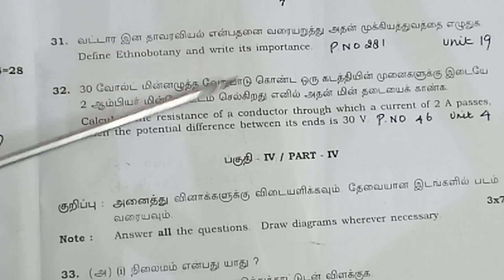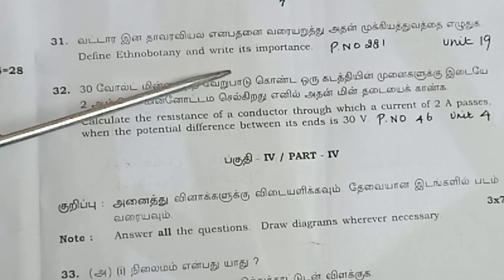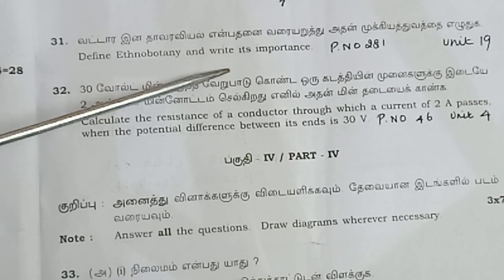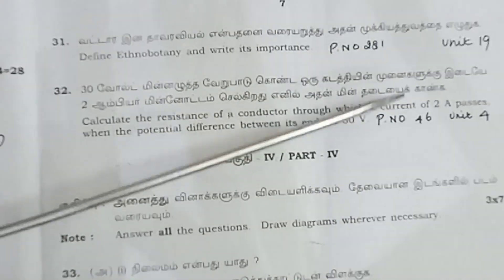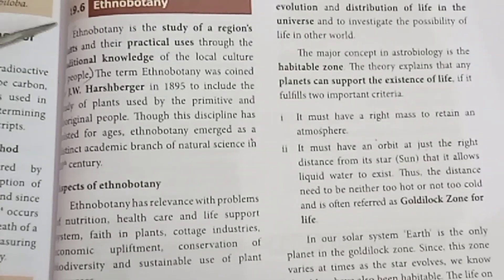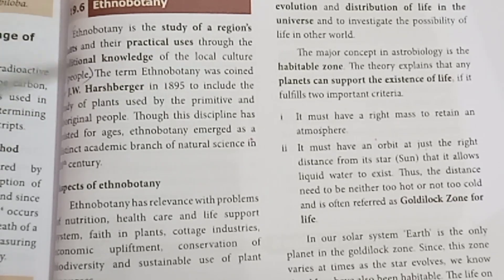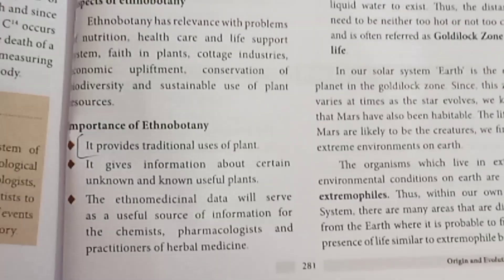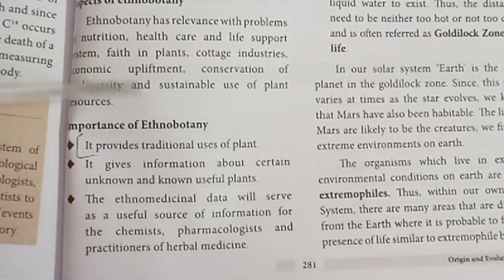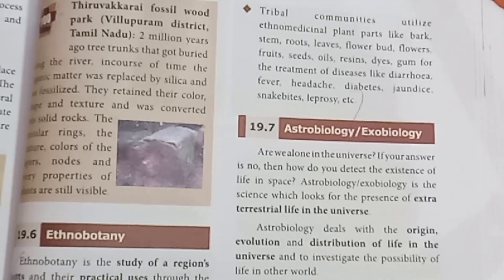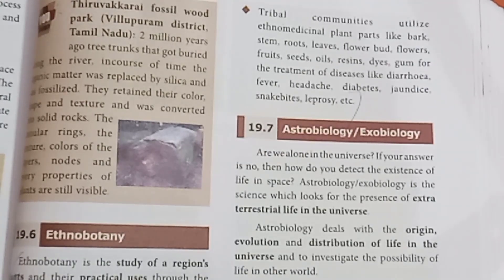Question 31: Define ethnobotany. Very important question asked in public exam 2022. Page number 281, Unit 19. Ethnobotany is the study of the local culture of people and their relationship with plants. Importance of ethnobotany: it provides strong funding for drug discovery, including treatment of diseases like leprosy.